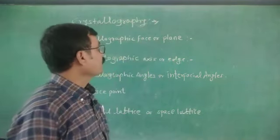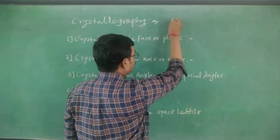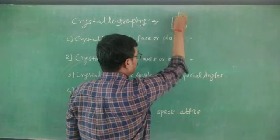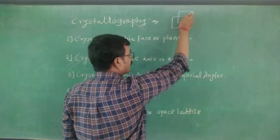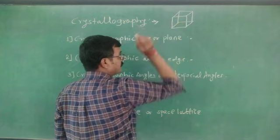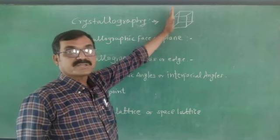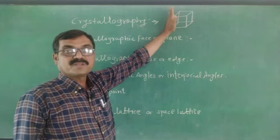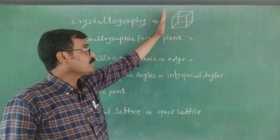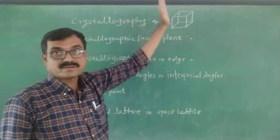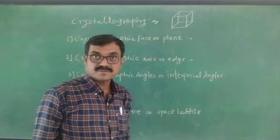This is a cube — all sides are of equal length. This cube has a cubic geometry. The study of such a crystal or crystalline substances under this special branch of science is crystallography. Crystallography includes the study of geometry as well as the structure and characteristics of crystalline substances.